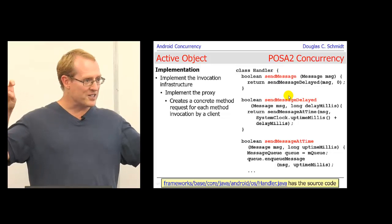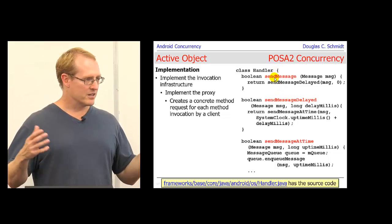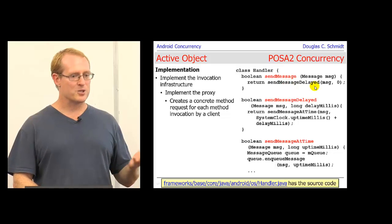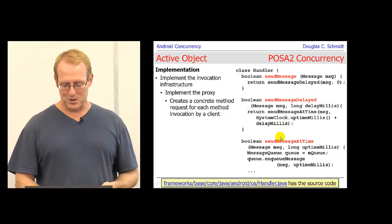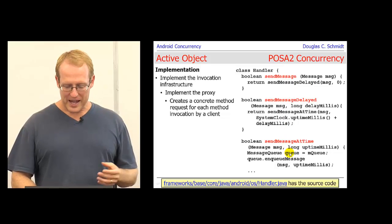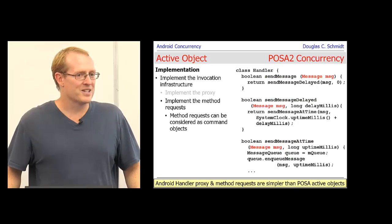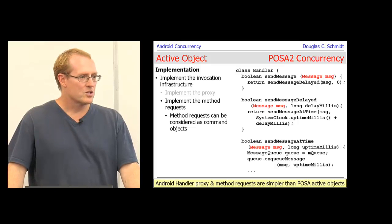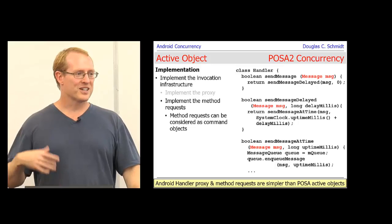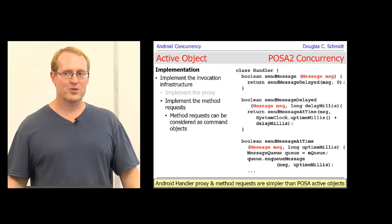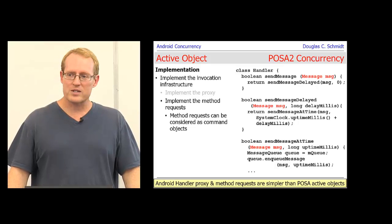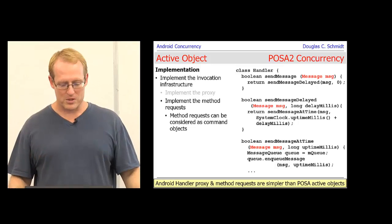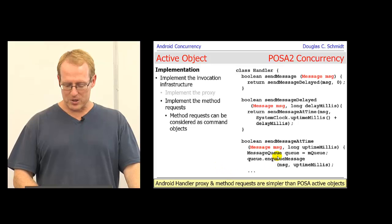The proxy in Android is defined in methods called sendMessage. sendMessage turns around and calls sendMessageDelayed, sendMessageDelayed calls sendMessageAtTime, and sendMessageAtTime actually converts things into a message that gets stuck into a message queue. That's how the proxy works in this variant of the pattern applied to Android — it's a simple, stripped-down version. The proxy and method request implementation for the Android handler are not as sophisticated as the full-blown pattern, but they're good enough to make the point.